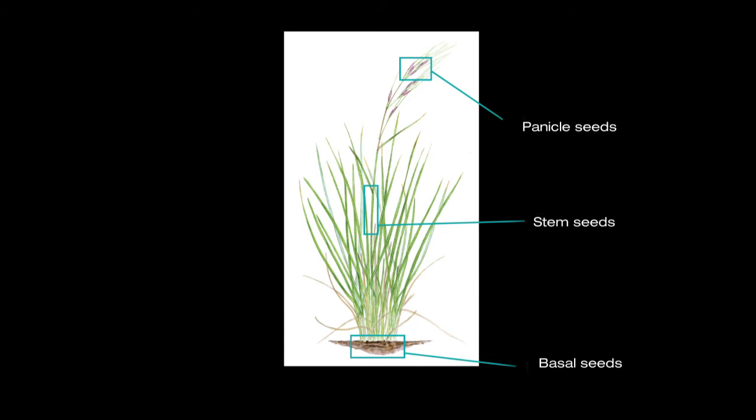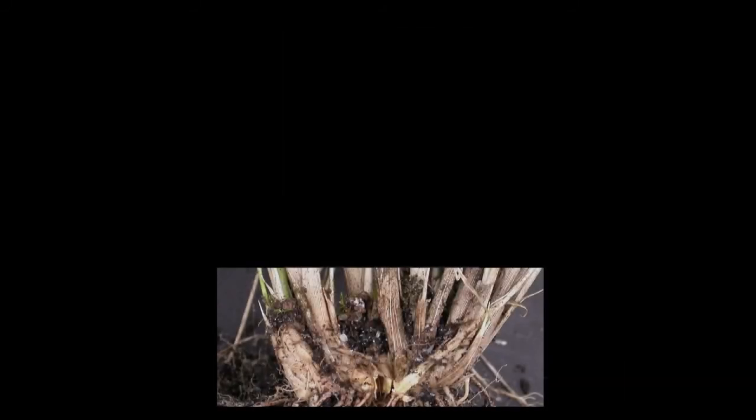Like stem seeds, basal seeds are also found in only a few grasses, including Chilean needle grass and Texas needle grass. Basal seeds are found at the base of the plant. They can start forming within months of seedling establishment and be viable within one season.